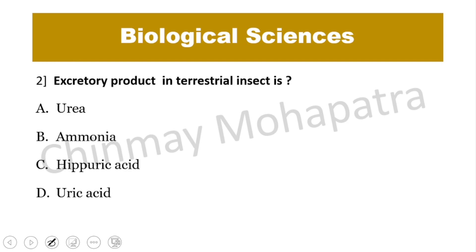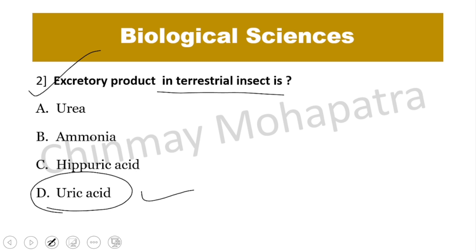Question number 2: What is the excretory product in terrestrial insects? The right answer is uric acid. Terrestrial insects use uric acid as their excretory product, as it is least poisonous.